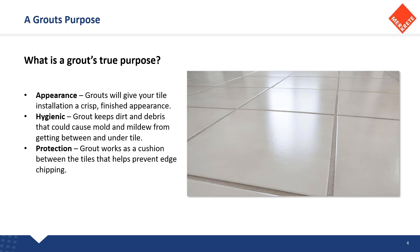Then there's protection. Grout works as a cushion between the tiles that helps prevent edge chipping. If you've got tiles butted up next to each other, there's what I've always referred to as knuckling — where there's maybe a little movement or just a tiny bit of deflection over a wood substrate — it's going to end up chipping the edges of the tile. So those are the three main objectives of grout: appearance, hygienic, and protection — it's protecting the edges of that tile.